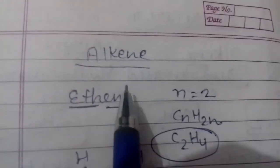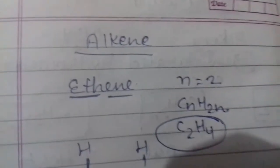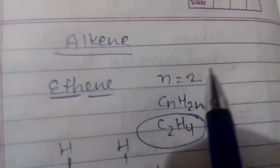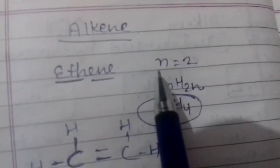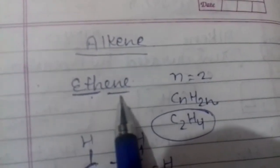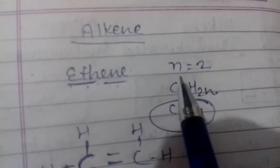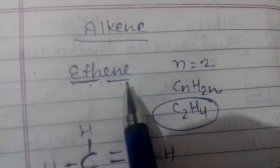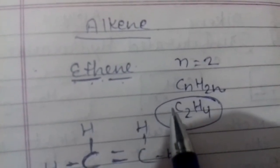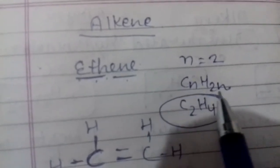Hello students, our topic is alkene. This time we will discuss how we can draw the electron dot structure of alkene and alkyne. To make alkene, first we take an example of ethene. In 'eth-ene', by the word 'eth' we can conclude that the number of carbons are 2, and by 'ene' we can conclude that the formula will be CnH2n. So here the formula will be C2H4, because the formula of alkene is CnH2n.